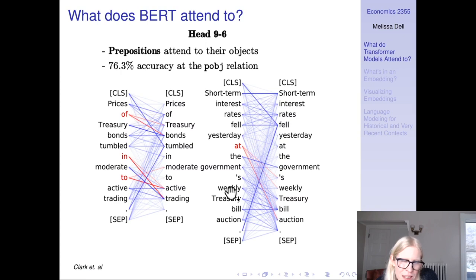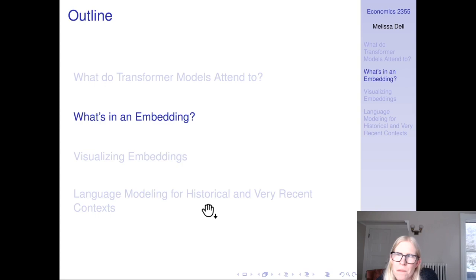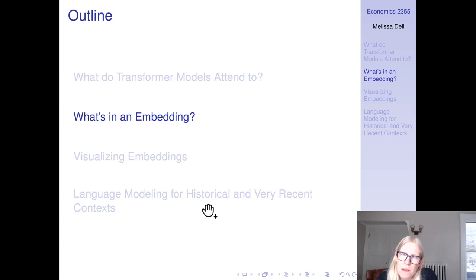Passive auxiliary verbs attend to the verb they modify, and prepositions attend to their objects. There are lots and lots of these heads with multiple heads in each layer, and they seem to be learning to attend to different linguistic phenomena important to understanding language, which is pretty amazing. The attention maps look reasonable, and when we get to vision transformers we'll also see visualizations of attention maps.